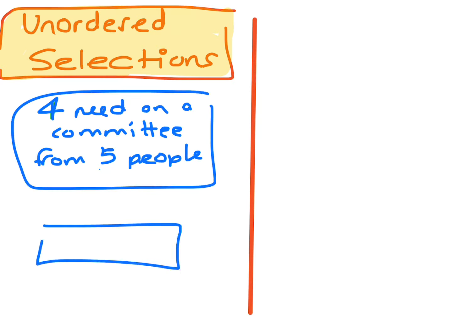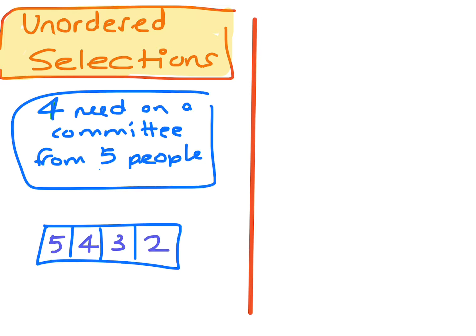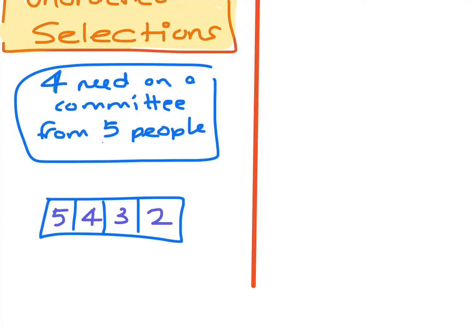When you're choosing the committee, we've got a special button that will actually do this, but I just want to show you the why as well. So you have a choice of five for the first position on the committee, choice of four for the second, the choice of three, and then a choice of two. But you've got this bit of added problem here that because when you're choosing those people...